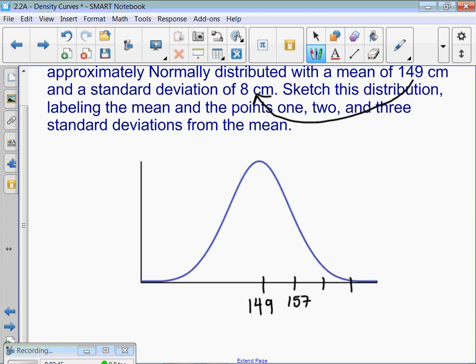How about two standard deviations above? If I add another 8 centimeters, what's that going to be? 165. And our third standard deviation above is? 173. So, if you're three standard deviations above, you're going to be pretty tall.